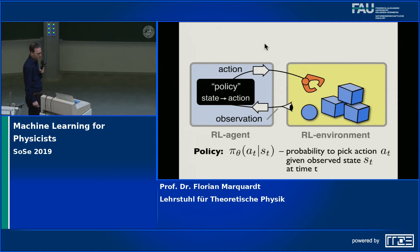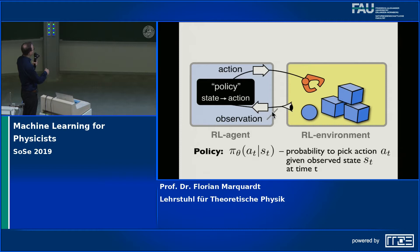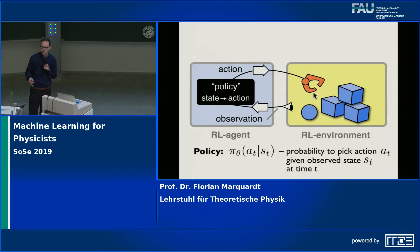The setup is shown here. You have some kind of agent that is interacting with an environment — the environment is the world around the agent. The agent makes some observations and through the observations it learns something about the state of the environment. Then a policy or strategy consists in mapping that state into an action: what do I want to do next if I observe this particular state? Then it executes this action, which usually involves changing the state of the environment — you move some object, for example.